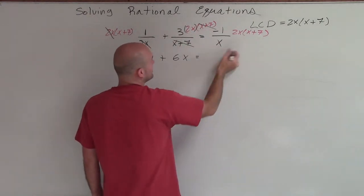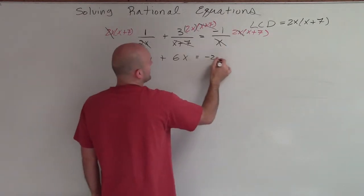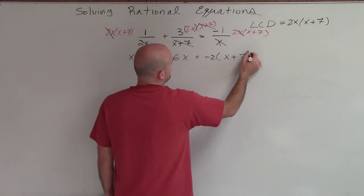Equals a negative 1. And the x's here cancel out. Negative 1 times 2 will be a negative 2 times x plus 7.